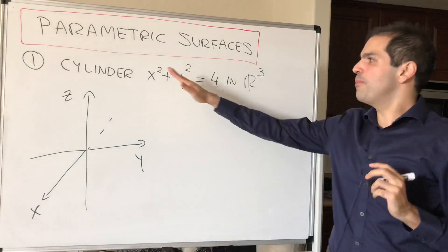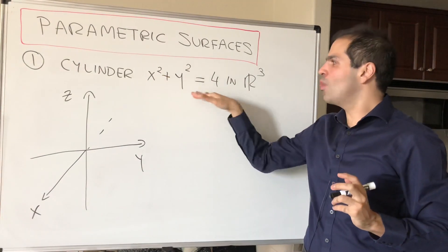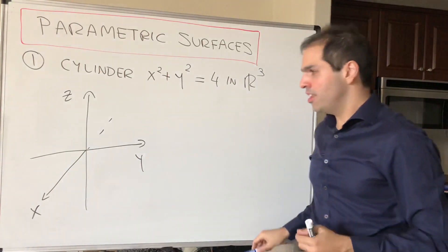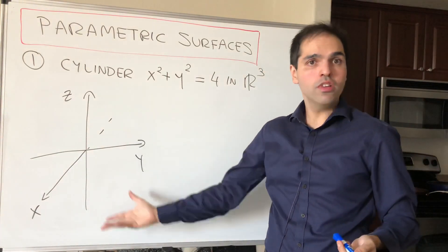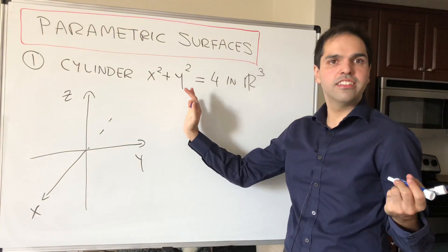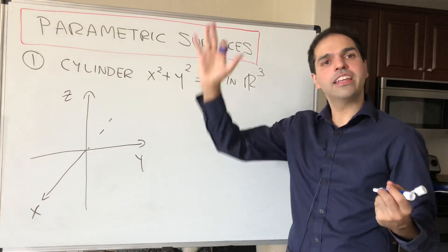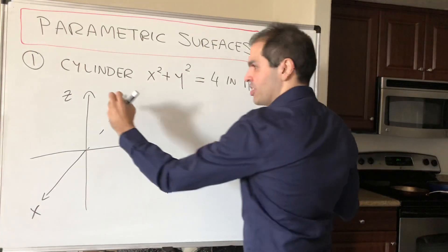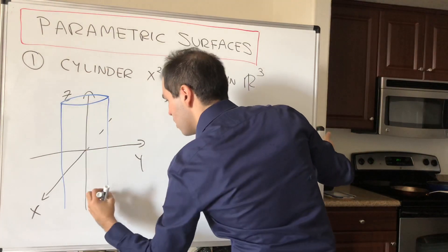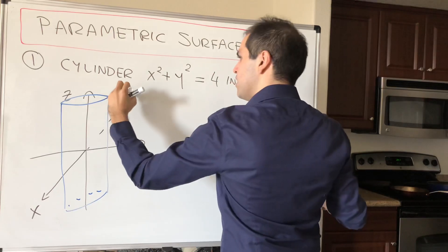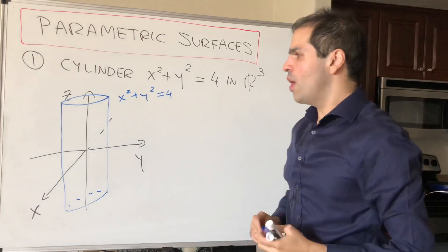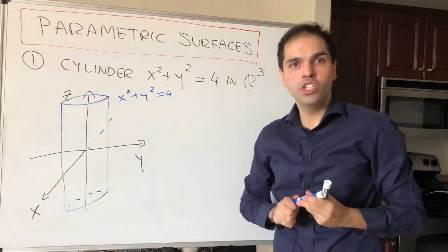All right, so the first example is the cylinder x squared plus y squared equals 4 in R3. And what it looks like, it's just your regular cylinder in R3, and because the variable z is missing in this equation, it means that it's a cylinder in the z direction. So it looks something like that. So x squared plus y squared equals 4. And the question is how would you describe it usually?